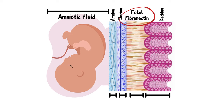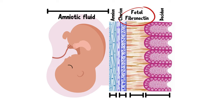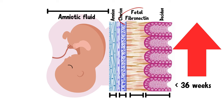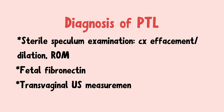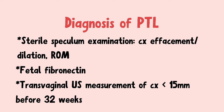Fibronectin is a protein that attaches the fetal amniotic sac to the uterus. Usually between 24 to 36 weeks, the amniotic sac is strongly attached to the uterus, but after 36 weeks, as the body prepares to deliver, this interface weakens and leaks anchoring proteins into the amniotic fluid. High levels of fetal fibronectin before 36 weeks are associated with an increased risk of preterm labor. A transvaginal ultrasound measurement of cervical length less than 15 millimeters before 32 weeks has also been associated with increased risk.